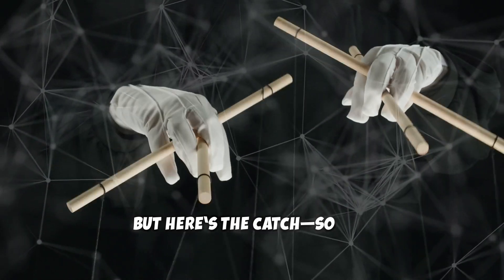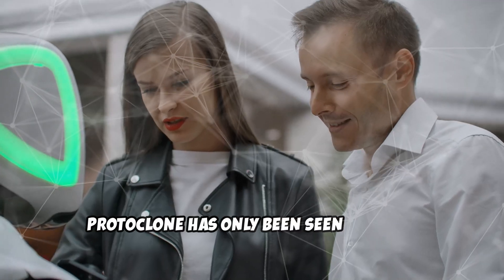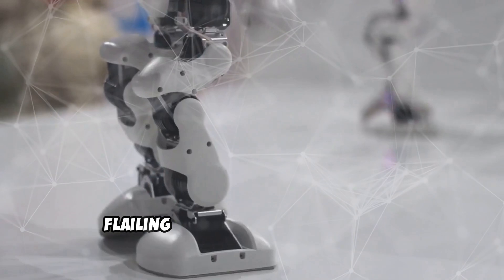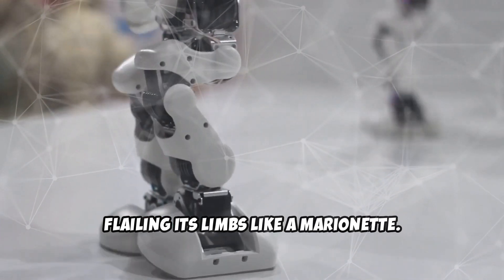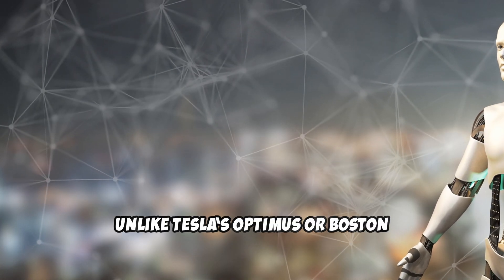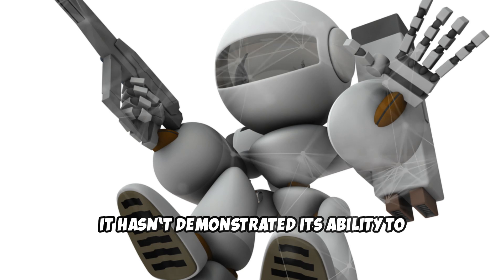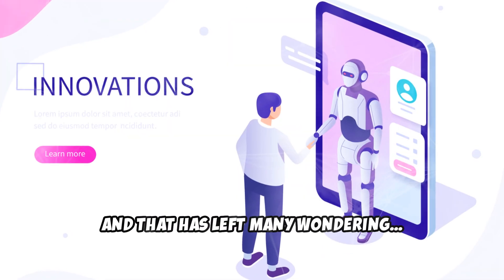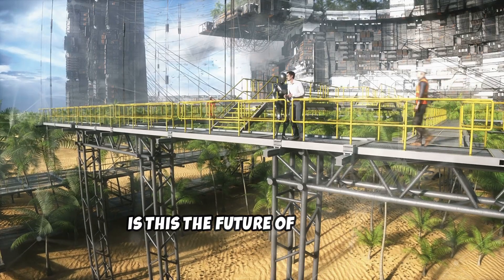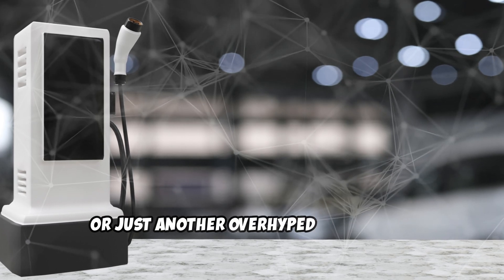But here's the catch. So far, Protoclone has only been seen hanging from strings, flailing its limbs like a marionette. Unlike Tesla's Optimus or Boston Dynamics Atlas, it hasn't demonstrated its ability to walk yet, and that has left many wondering. Is this the future of robotics, or just another overhyped prototype?